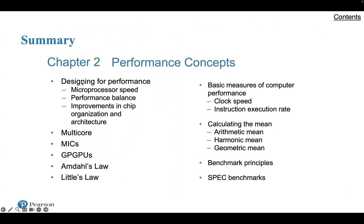We're going to be looking at how we design for performance and the development of this over time. What are the various types of metrics that are out there? What are the basic measures of computer performance — whether it be clock speed or instruction execution rate — and the pros and cons of each? We'll also talk about different types of means for average performance and benchmarking principles, including SPEC benchmarking.